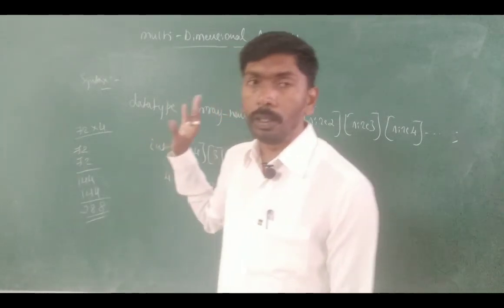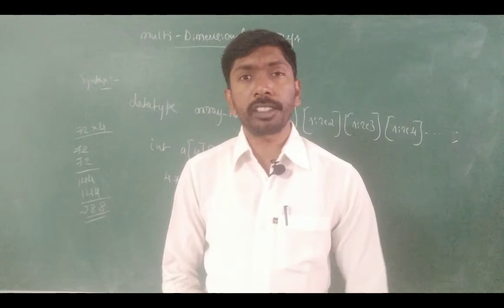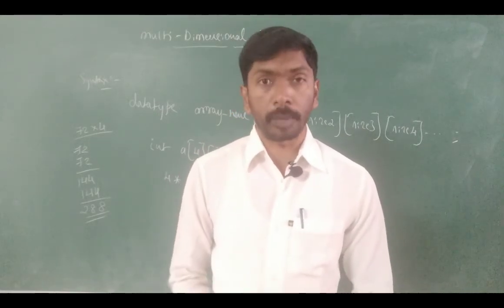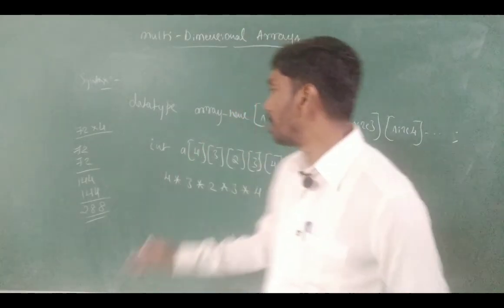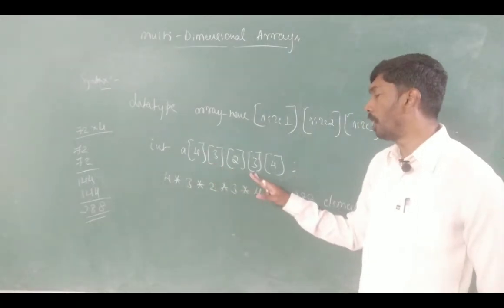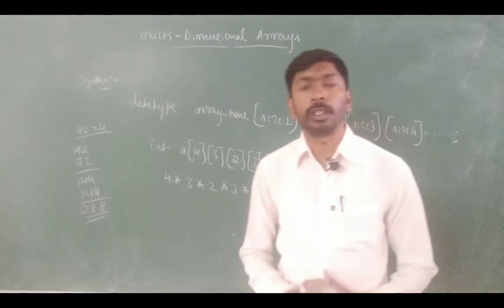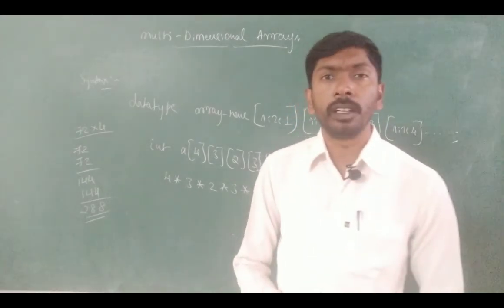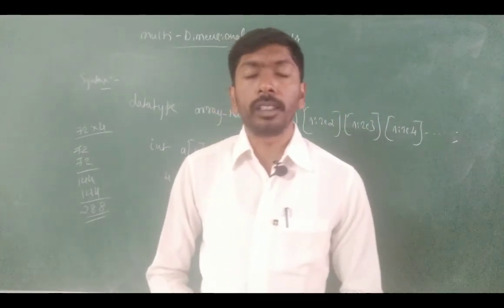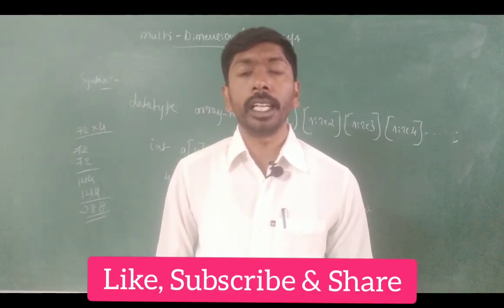So this is all about the multidimensional array — that means it is a homogeneous collection of data elements with n set of square brackets. 1 set uses 1 dimension, 2 sets uses 2 dimensions, 3 sets uses 3 dimensions, 4, 5, 6, 7, 8 — it is called a multidimensional array.